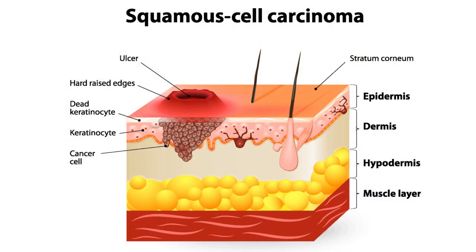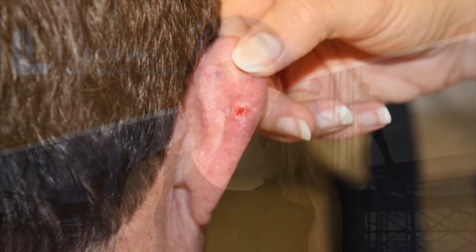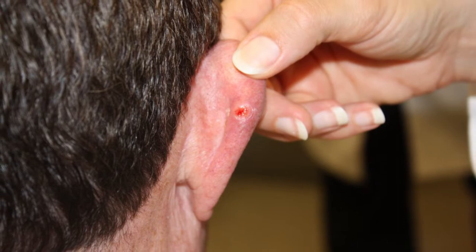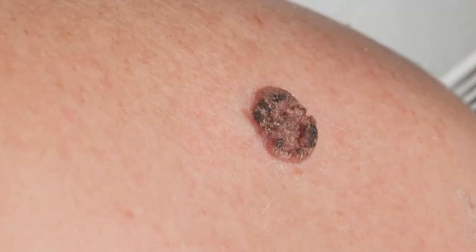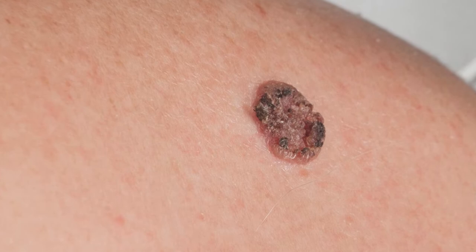Squamous cell carcinomas are the second most common type of skin cancer. They are also related to cumulative sun exposure and occur in sun-exposed areas, especially the ears and lips. Squamous cell carcinomas appear as a reddish or brown scaly lesion or crusty patch. This type of skin cancer can spread and is usually not deadly.